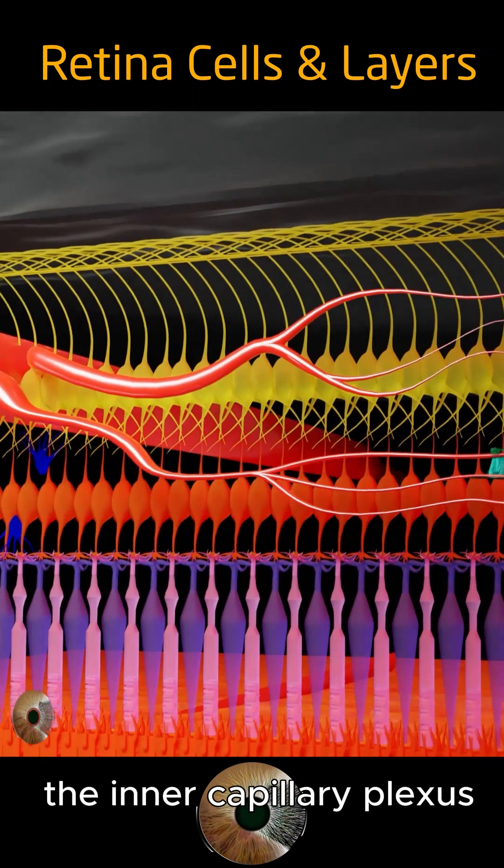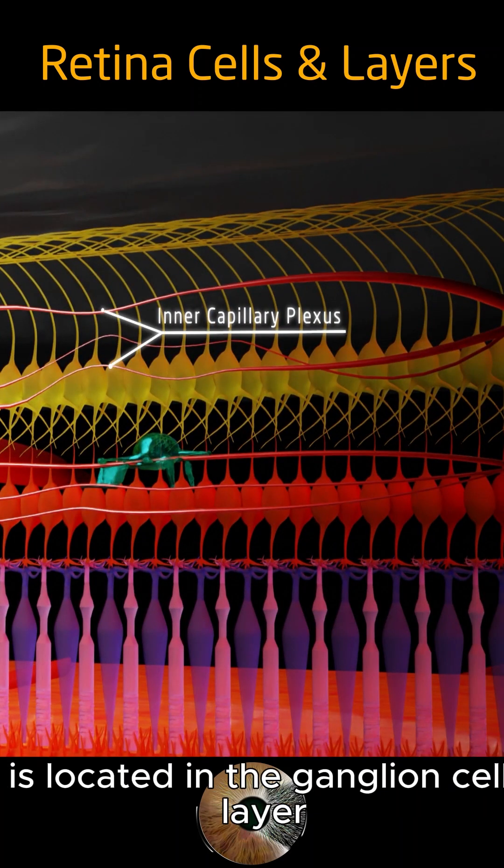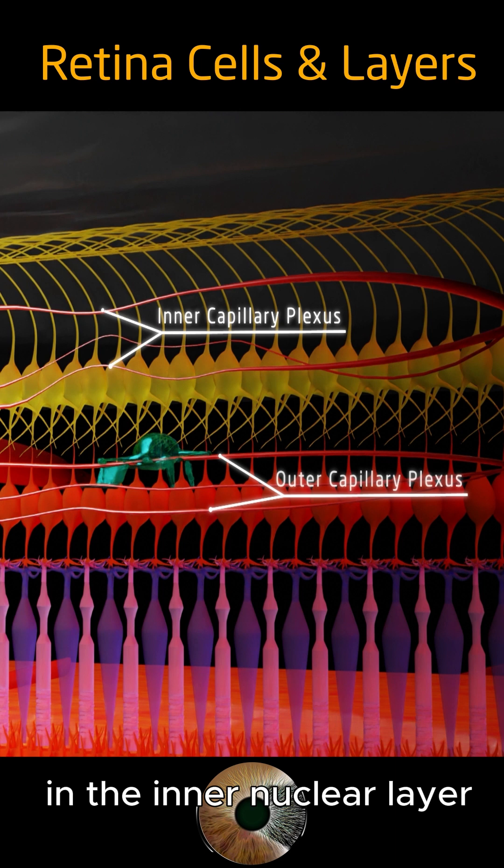The inner capillary plexus is located in the ganglion cell layer and the outer capillary plexus in the inner nuclear layer.